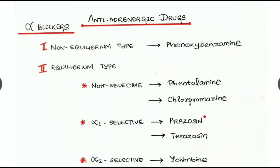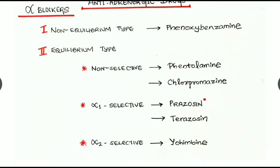Alpha blockers are divided into two types: non-equilibrium type and equilibrium type. The non-equilibrium type is phenoxybenzamine. The equilibrium type is again subdivided into three: non-selective, alpha-1 selective, and alpha-2 selective. Non-selective examples are phentolamine and chlorpromazine.